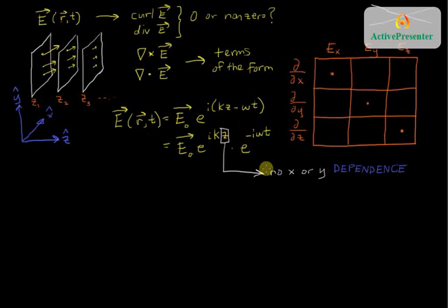If there's no x or y dependence, that means that all d/dx derivatives and d/dy derivatives must be zero. There is no variation with x or y. So I rule out all of the x derivative possibilities and all of the y derivative possibilities. These are the only three derivatives that can possibly exist: those that are with respect to z.